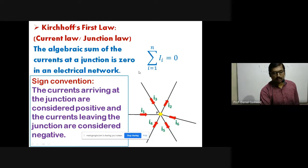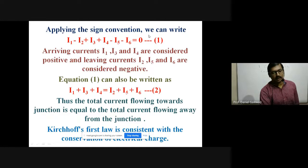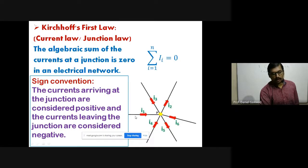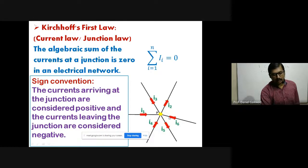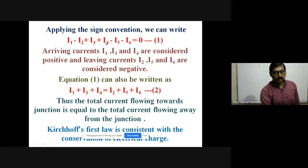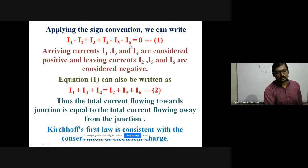Applying the sign convention: I1, I3, and I4 are taken as positive since they move towards junction P. I2, I5, and I6 are taken as negative since they move away from the junction. On addition of all these currents, the result is equal to zero. This is equation number one.